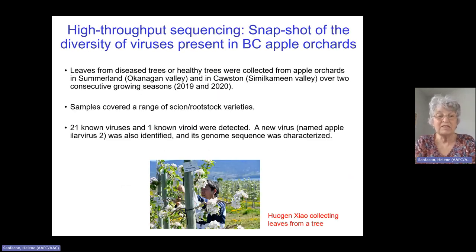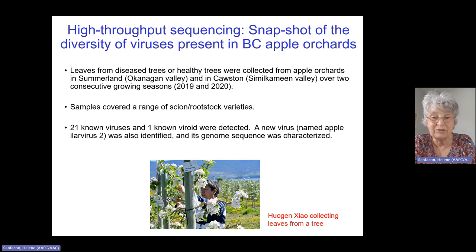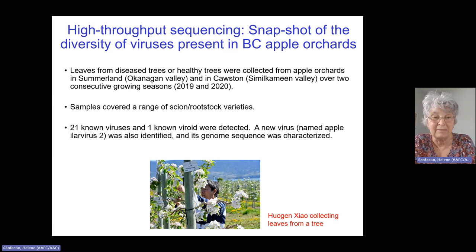When we started the project in 2019, we decided to begin with high-throughput sequencing to see what viruses were present in BC apple orchards. I'm showing a picture here of Hogan Shaw from my lab, who did all the work in collecting samples and analyzing them — so essentially all the work I'm going to describe was done by Hogan.